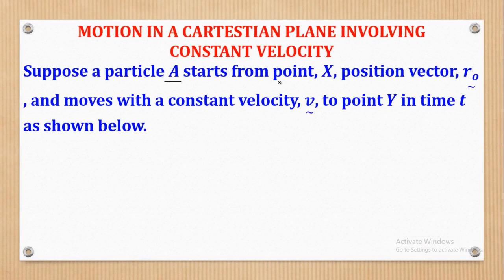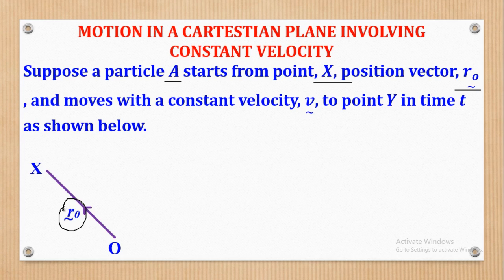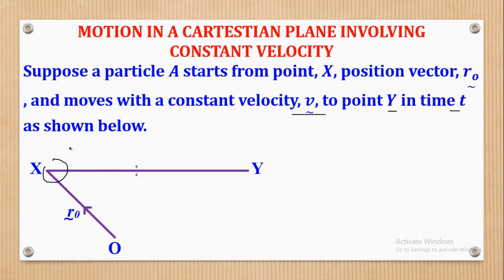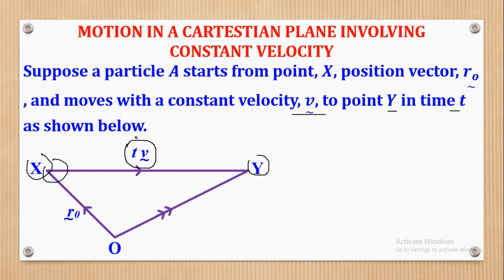Suppose a particle A starts from point X with position vector R-naught. OX will be the position vector initially, represented by R-naught with a tilde. It moves with a constant velocity V in vector form to point Y in time T. XY is the displacement vector from the initial position. Since velocity is constant, the displacement moved will be time times the constant velocity. The line joining O to Y is the position vector at any time T after time T.